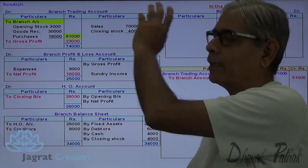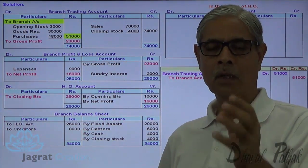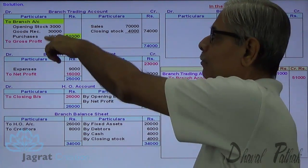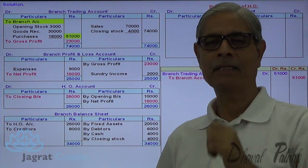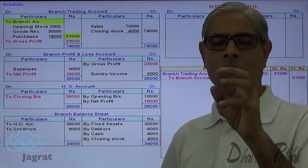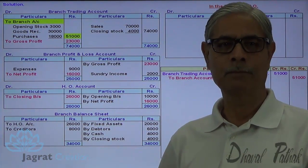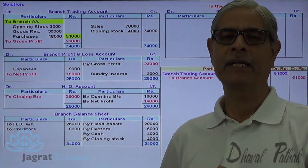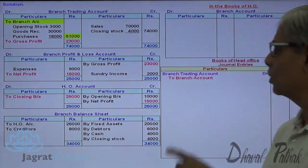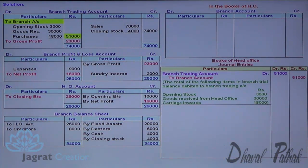Branch trading account debit, to branch account credit. Branch has purchased goods or acquired goods from HO — all these goods are purchased by the branch and payment is made by the branch for that. Branch is presumed to be a giver for goods sent to the branch that are consumed for the purpose of trading. So, branch is the giver and credit is given — branch account is to be credited.